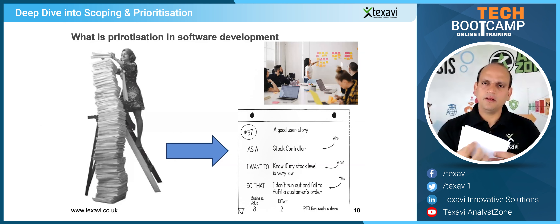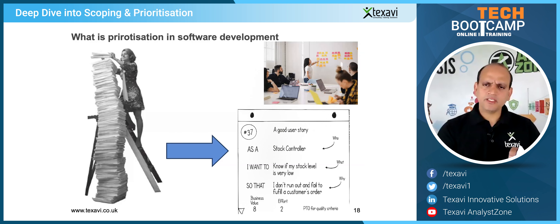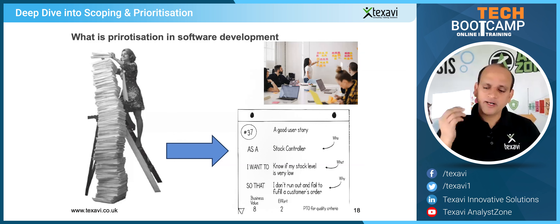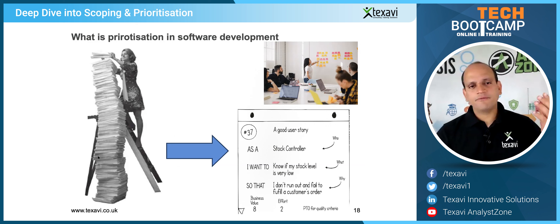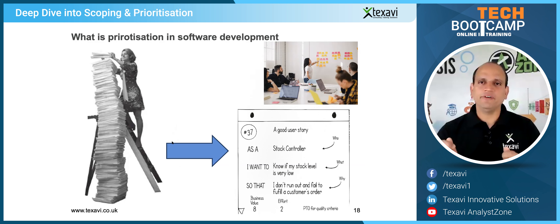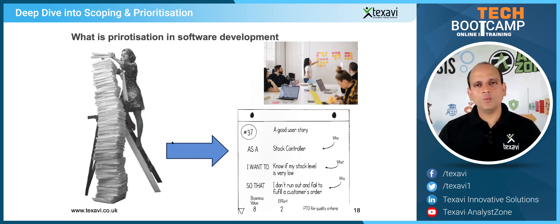A user story could be written on the back of an index card. You could actually take it and write: 'As a user, I can do this so that I get this benefit.' You write this here, prioritize it, work on it, and that enables the conversations and confirmation. The shift from humongous documentation to lightweight documentation of a user story on the back of a card — that's the major shift.